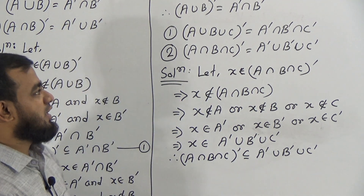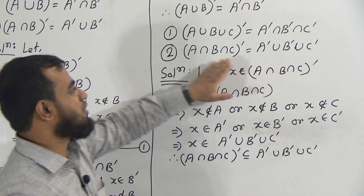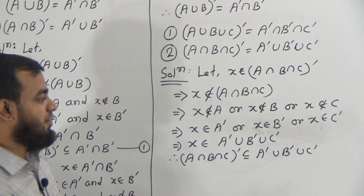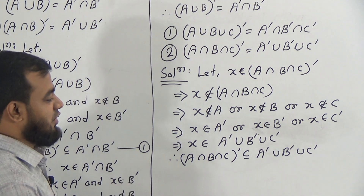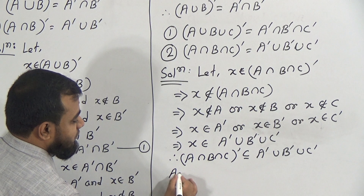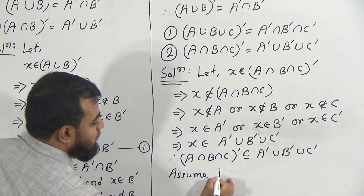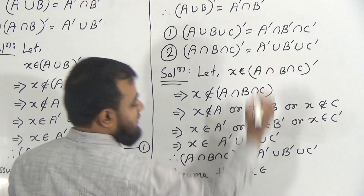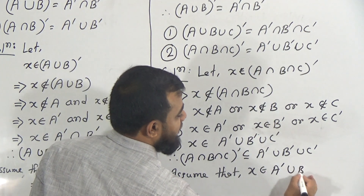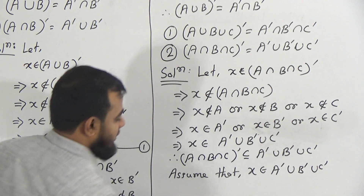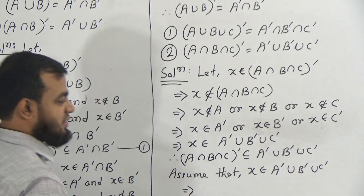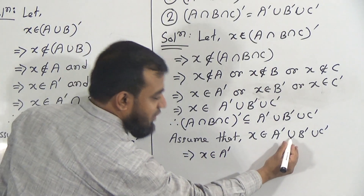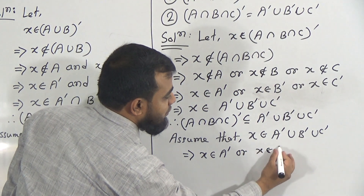Now we need to prove the right hand side is a subset of the left hand side. We assume that x is an element which belongs to the right hand side: A prime union B prime union C prime. That implies x belongs to A prime, or x belongs to B prime, or x belongs to C prime.